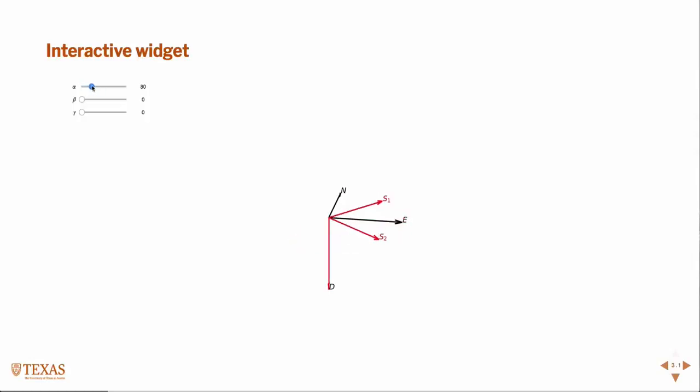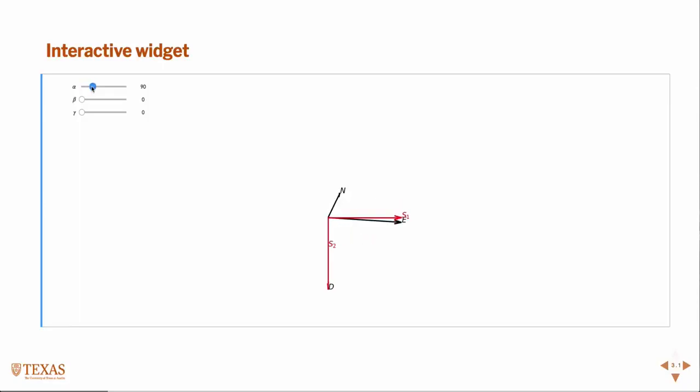Everybody understand what angle alpha is now? I did it this morning. I wanted to impress my guests. So, see, it can get really complicated if you were to just, if all the angles are non-zero. But the reality is, one of them is always going to be down. If S1 is down, remember S1 is the greatest of the three principal stresses. If it's down, what's the Anderson faulting scheme? Normal faulting.